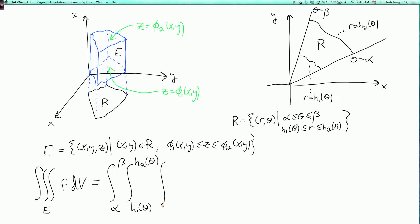And then z goes from phi1 of r, theta to phi2 of r, theta, and f of r, theta, z. And then we need a magnification factor like before, so we have r dz dr d theta. So this r here is the same magnification factor as in polar coordinates.